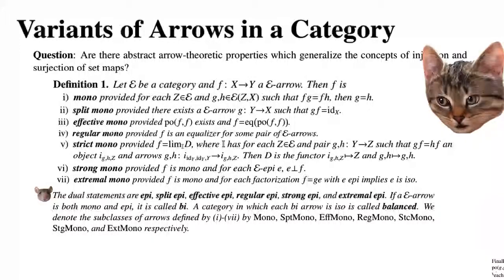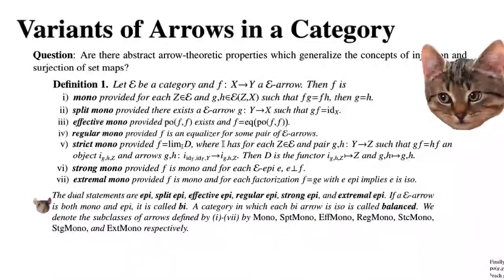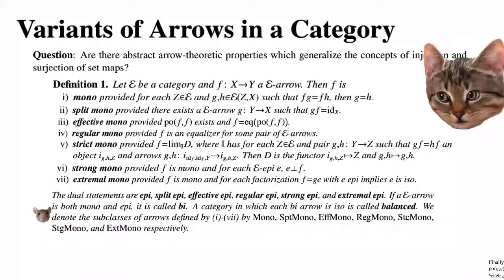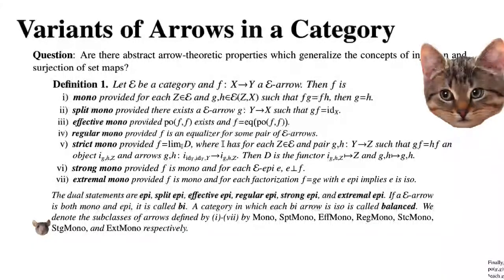If an E-arrow is both mono and epi we call it a bi, though some suggest always saying 'both mono and epi' to avoid confusion with bimorphism from higher category theory. A category in which each bi-arrow is iso is called balanced. We denote the subclasses of arrows defined above by Mono, SplitMono, EffectiveMono, RegularMono, StrictMono, StrongMono, and ExtremalMono respectively, with analogous notation for the epi variations.